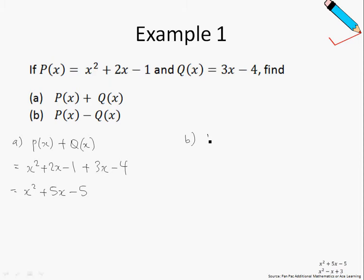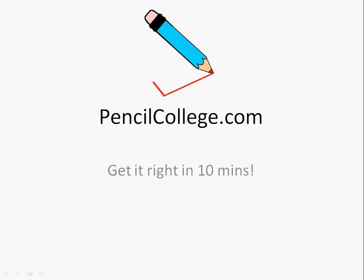So next, let's try px minus qx. As you can see, we're subtracting two polynomials. We're subtracting, in fact, qx from px. So px will be this minus qx. Don't forget to keep qx in brackets. This is very important. Then, let us now open up the brackets and simplify a little bit more. And there you have it. This is px minus qx. So, this is nice and easy to begin the chapter. We'll look at more examples in the next video. And for more videos, please log on to pencilcollege.com. I'll see ya.